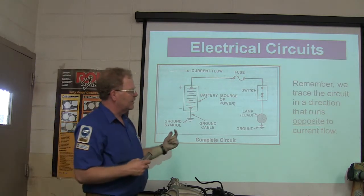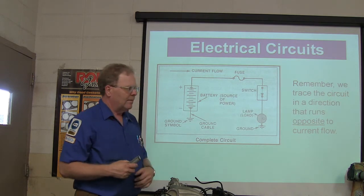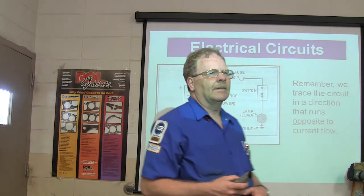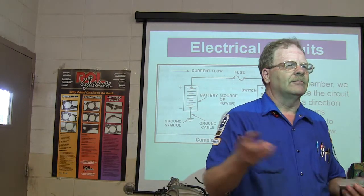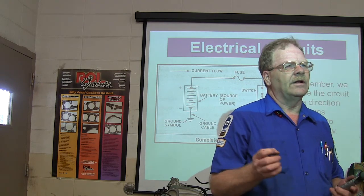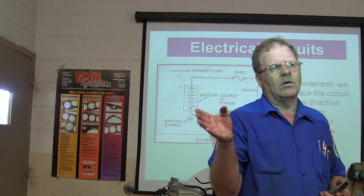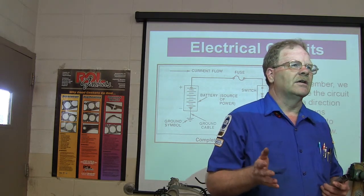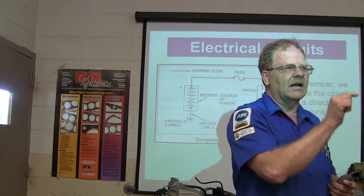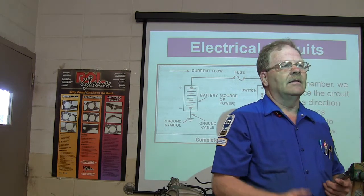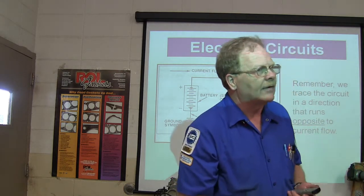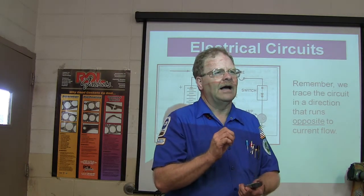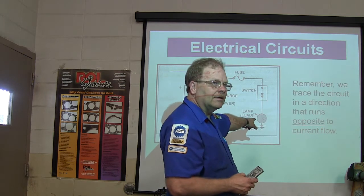We trace the circuit in the direction that runs opposite to the current flow. If I've got a lamp that doesn't work — let's say one of your stoplights doesn't work on one of those trucks. If you've got one stoplight not working, you know it's not a fuse. If the high mount stoplight and the other stoplight work when I press the pedal, then I know the switch isn't a problem and the fuse isn't a problem. So I'm basically going to go to that stoplight and see if I have power there whenever the brake lights are applied.